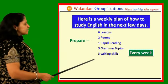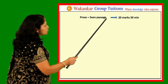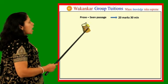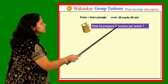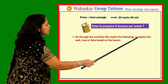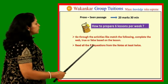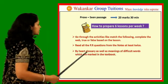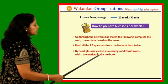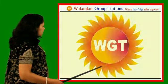Students, you have to follow this plan every week. Now let us see the approach section. There are 2 seen passages which are of 20 marks; you have to complete them in 30 minutes. How to prepare the approach section of 6 lessons per week: go through activities like match the following, complete the blanks, true or false based on the lesson. Read all the PR questions from the notes at least twice. By heart the glossary as well as meanings of difficult words which are marked in the textbook. Try to write 3 PR questions in 12 minutes at a time.